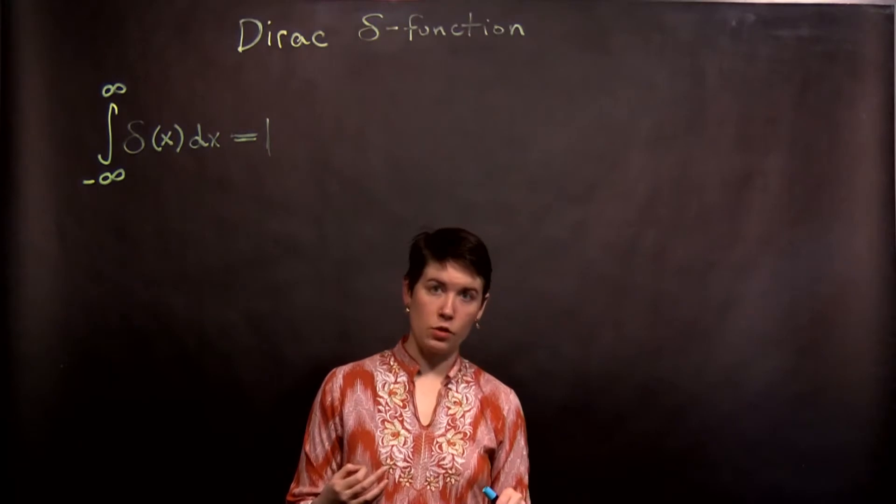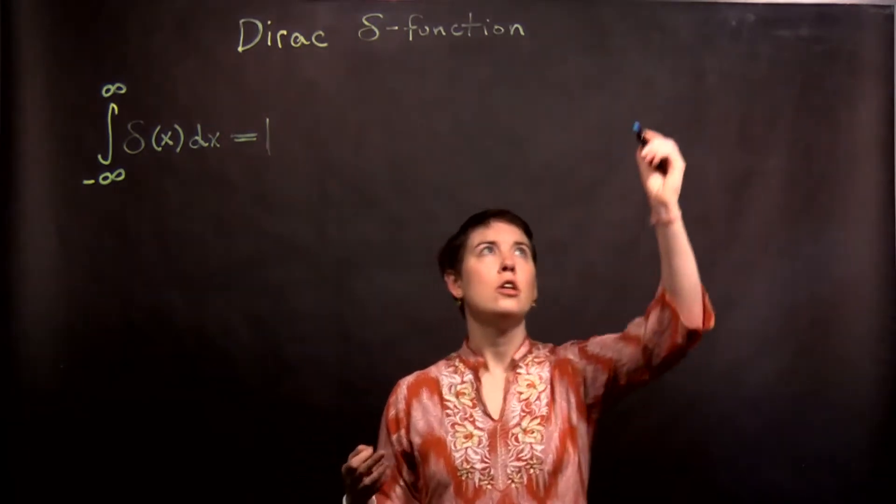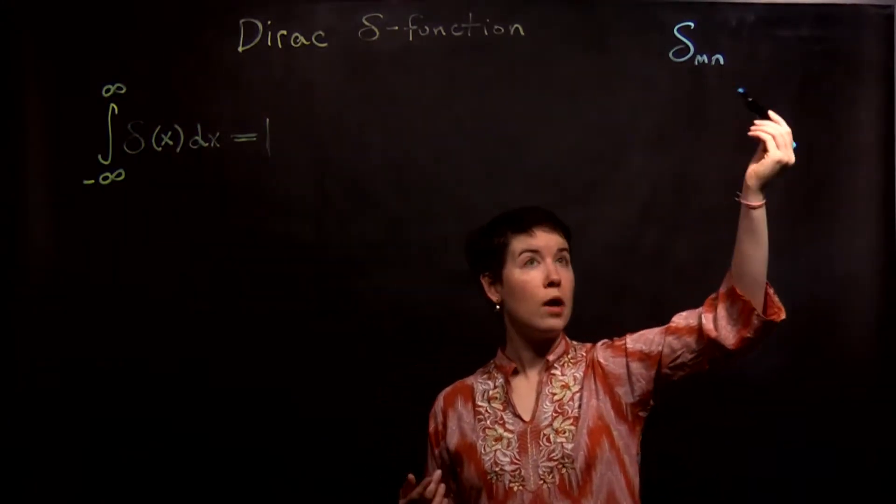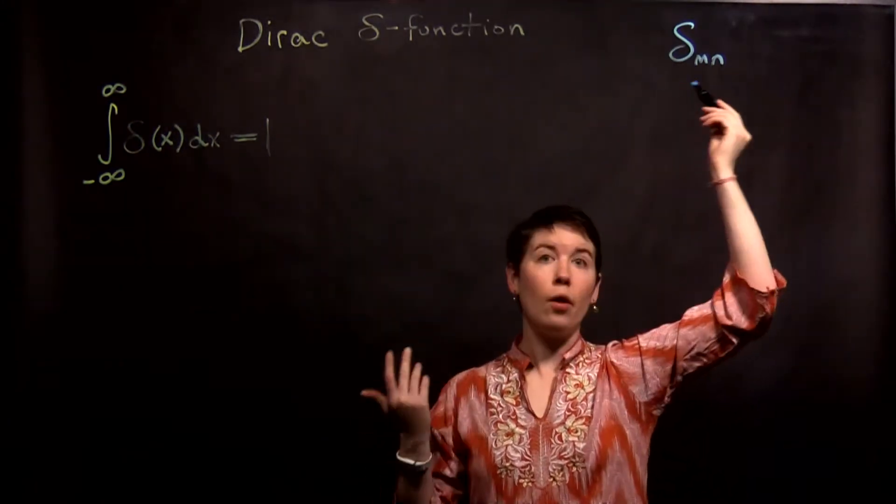The Kronecker delta function is a discrete function. So for instance, if I have delta mn, we've met this already. This is 1 when m equals n and 0 otherwise.